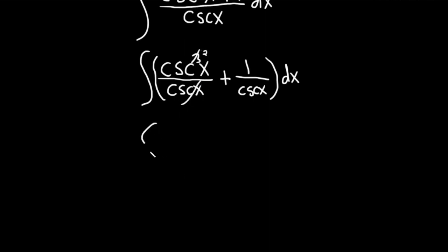So this is going to become the integral of cosecant squared of x. And then 1 over cosecant, that's just sine. So this is plus sine of x and then dx.